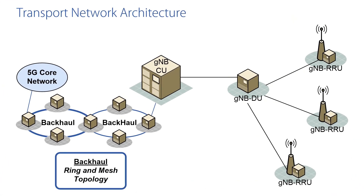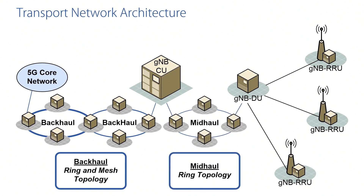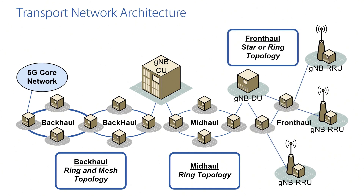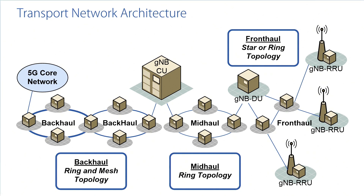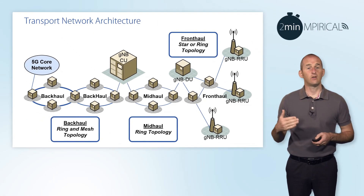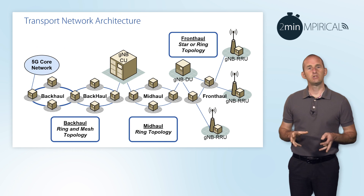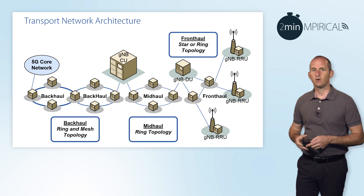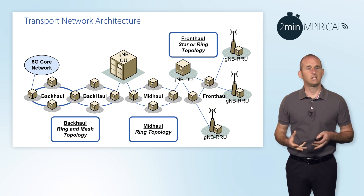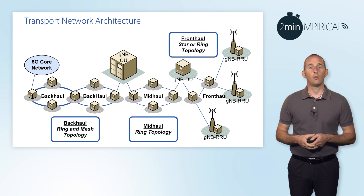For midhaul, a centralized unit connects to multiple distributed units, which would typically be deployed on a ring type topology. And then finally we've got the fronthaul element, which could potentially be a star topology or indeed a ring topology once again. Much of this infrastructure from the transport network perspective will potentially be deployed on optical fiber.